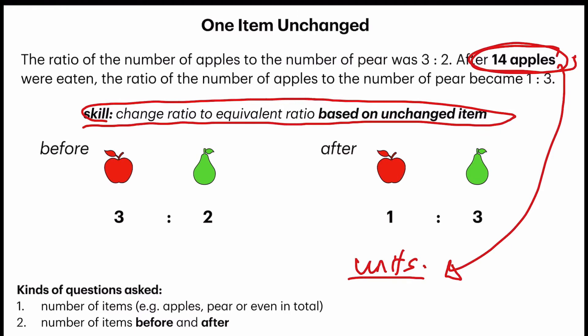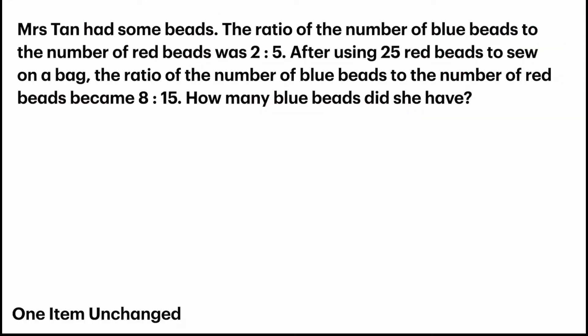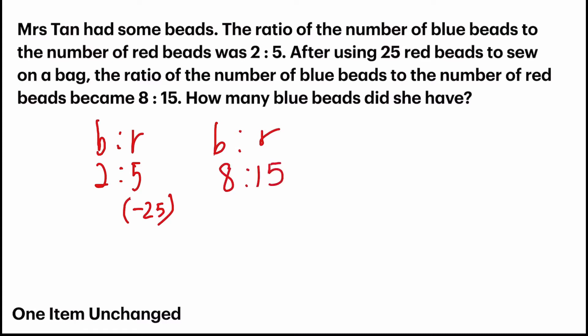Let's look at a few questions and try them out. Mrs. Tan had some beads. The ratio of the number of blue beads to the number of red beads was 2 is to 5. After using 25 red beads to sew on a bag, the ratio of the number of blue beads to the number of red beads became 8 is to 15. What type of question is this? Observe — there is only one change, applied to the red beads, which means blue is constant. This is a one-item-unchanged question.